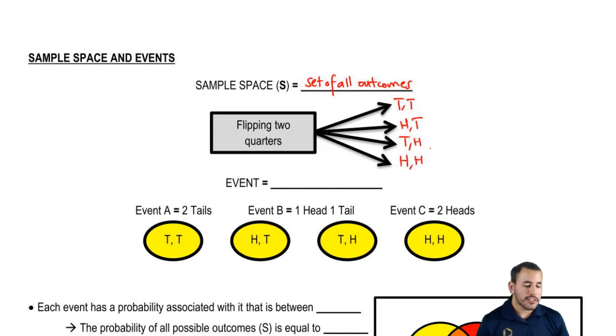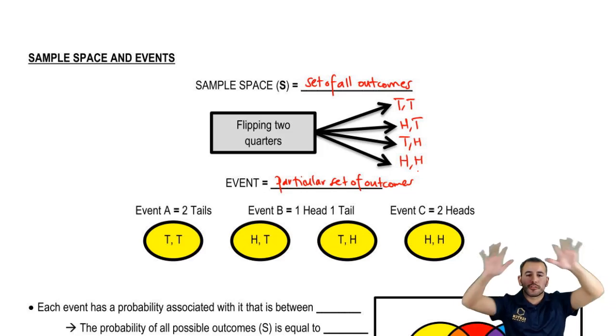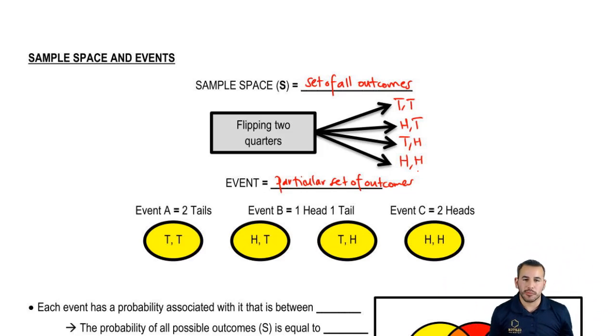Now, events are basically a particular set of outcomes. So within the sample space, there's a bunch of different possible events, right? And so let's go ahead and look at a couple. We have the first one, event A.